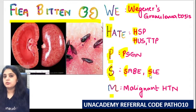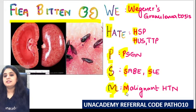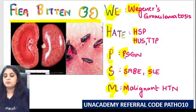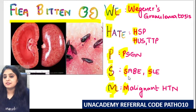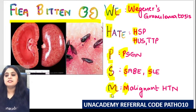P stands for post-streptococcal glomerulonephritis (PSGN). S stands for subacute bacterial endocarditis (SBE) and SLE. M stands for malignant hypertension. So to recap: V — Wegener's, H — HSP/HUS/TTP, P — PSGN, S — SBE and SLE, M — malignant hypertension.